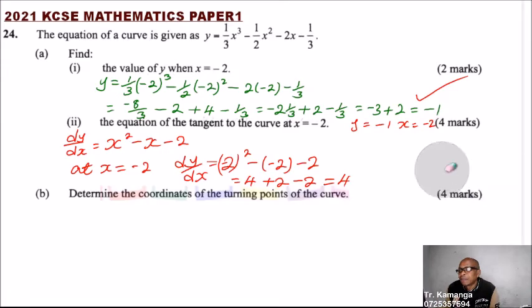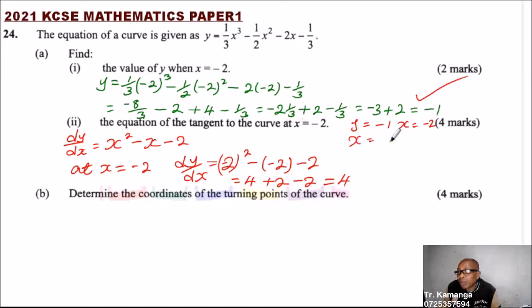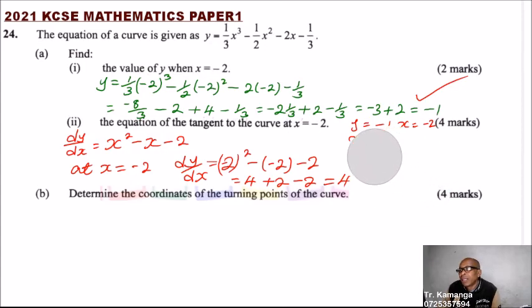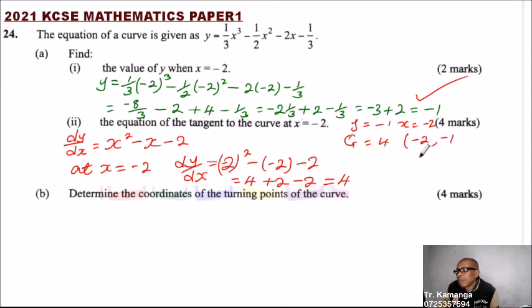With the gradient, and we know at x equals minus 2 — we already found the value of y is minus 1 in part (i). So we can actually get the coordinates here. We have gradient equals 4, and the point which is minus 2 and minus 1. That is the point we are going to use.